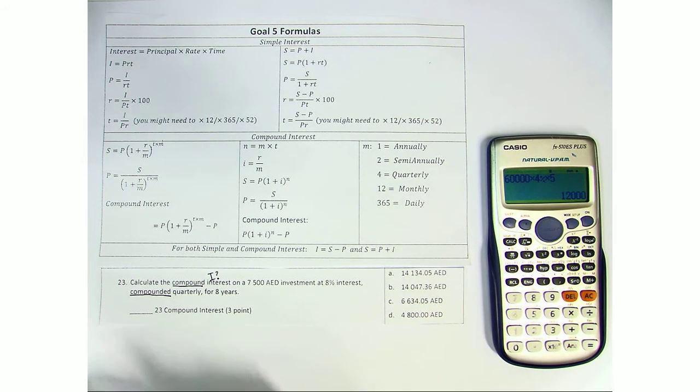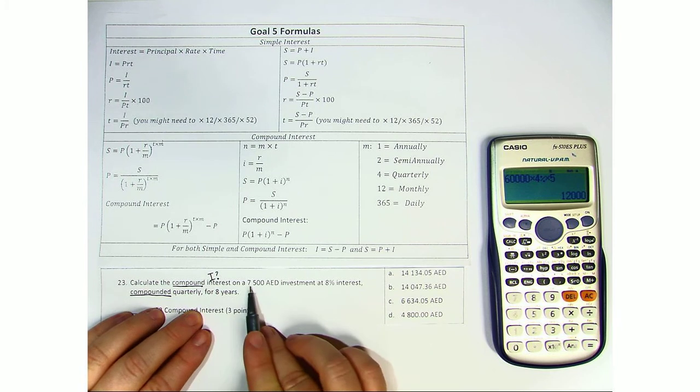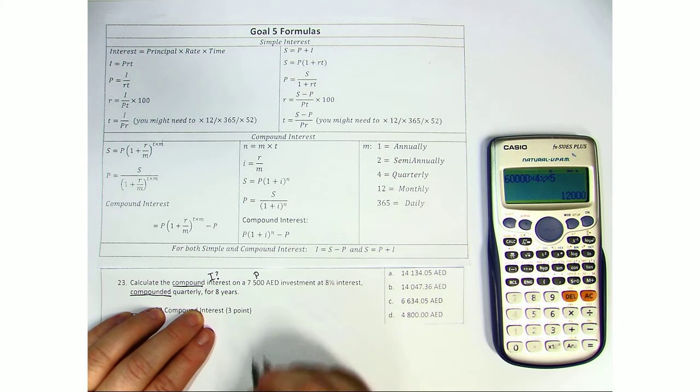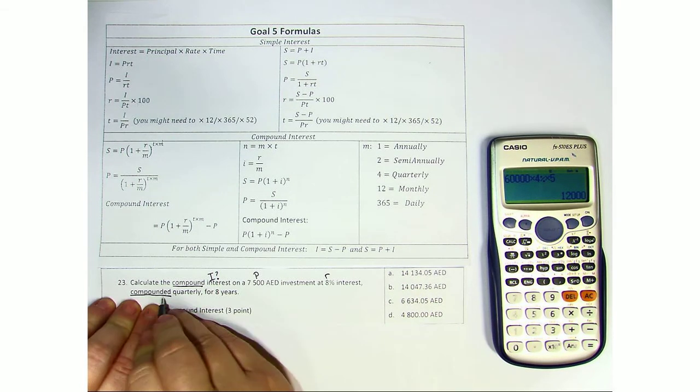So, we have to start by identifying our parts. The compound interest on 7,500 dirham investment. So this is my principle. 8% interest is my rate, compounded quarterly.